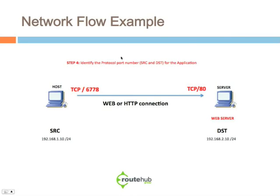We identified the port numbers, but this is more significant for the destination, not for the source. However, there are certain applications where there are assigned port numbers for the source. For example, there's something called Network Time Protocol, or NTP. It uses UDP, and the port number is 123 — 123 for the destination side, but it's also the same port number on the source side, which is also 123.